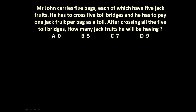Mr. John carries 5 bags, each of which have 5 jackfruits — so each bag contains 5 jackfruits. He has to cross 5 toll bridges and pay 1 jackfruit per bag as toll tax. After crossing all 5 toll bridges, how many jackfruits will he have? The options are 0, 5, 7, or 9.